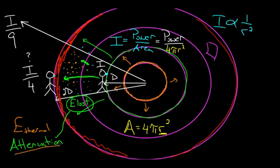These are the two independent reasons why sounds get softer with distance. One: the power is spread out over a larger area. Two: some of the power doesn't even make it to where you are because it gets lost due to attenuation in the medium itself.